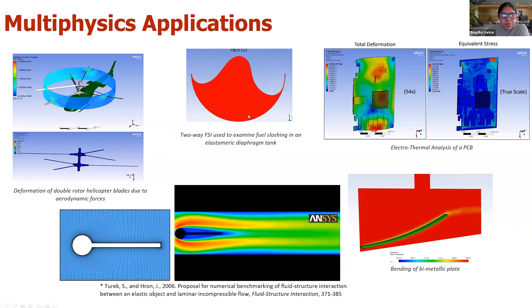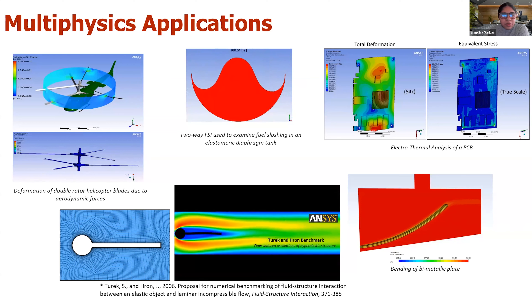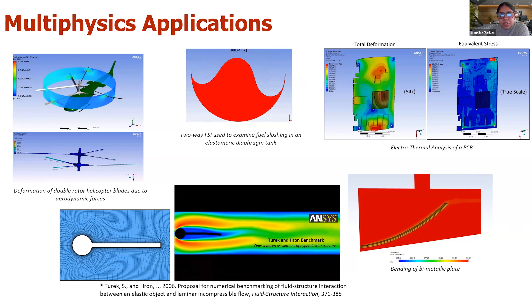In the second example, we're doing a two-way FSI simulation for fuel sloshing in an elastomeric diaphragm tank. Because the tank body is not very rigid, you can see strong coupling between the structures and the fluid side. On the top right corner is an electrothermal analysis of a PCB — a very common application in the electronics industry. You have electrical traces and joule heating in your PCB board, so you do heat transfer analysis to look at the heat generated throughout the board, and then import those results into your structural solver to look at stresses or deformation, helping understand the reliability of your electronic components.